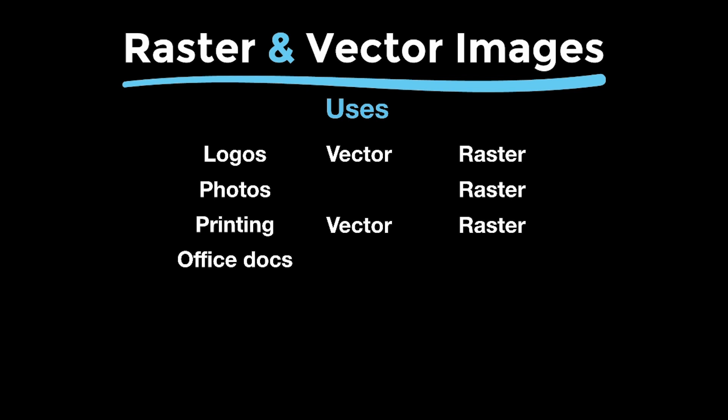For office documents in Word or PowerPoint, you're going to need a JPEG or a GIF, so most of the time you'll be using raster images. The fonts are vector, but they're pretty much the only thing you can bring into an Office document as vector. You can use PNG files, which can have a transparent background though. For sublimation, if you're creating a sublimation file, you're always going to want a very high quality PNG file with a transparent background, and that is raster.